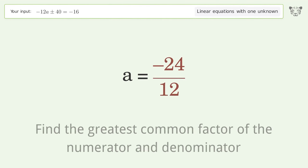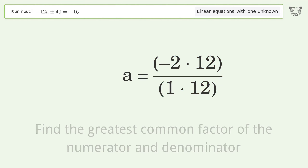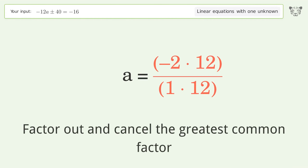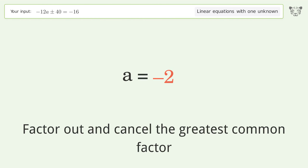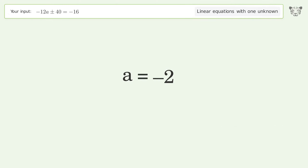Find the greatest common factor of the numerator and denominator. Factor out and cancel the greatest common factor. And so the final result is a equals negative 2.